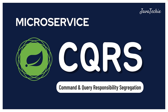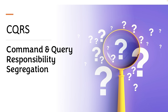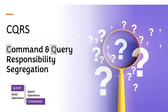First, let's understand what CQRS means. CQRS stands for Command and Query Responsibility Segregation. To simplify, it clearly says to segregate query responsibility — which is the read operation — and command responsibility — which is the write operation — in your microservice. In simple words, CQRS suggests we segregate read and write operations to different services rather than mixing them in a single microservice.